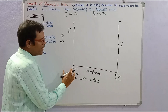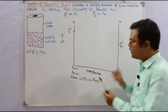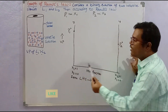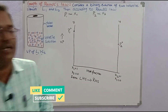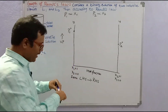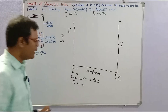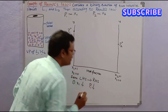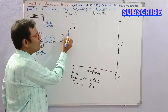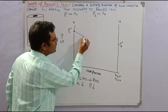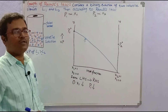From left hand side to right hand side, the mole fraction of x1 decreases. When the mole fraction of liquid 1 decreases, its vapour pressure also decreases automatically. So we draw a line showing the decreasing vapour pressure, and this is P1 — the partial vapour pressure of liquid 1.